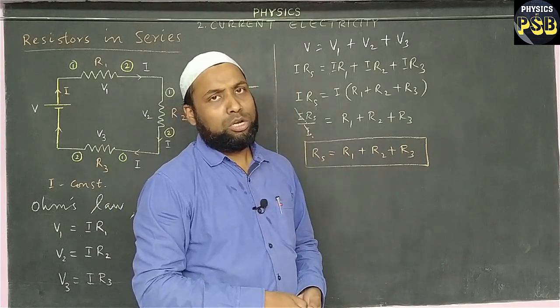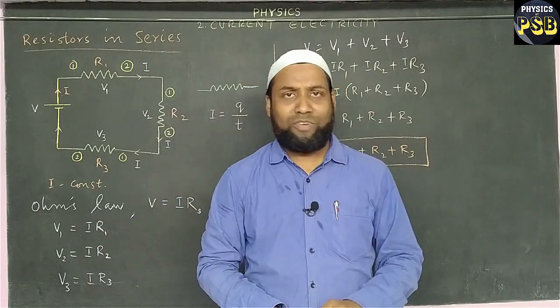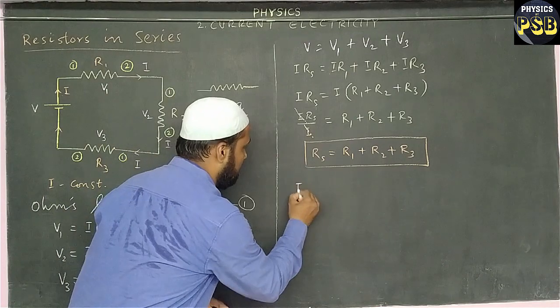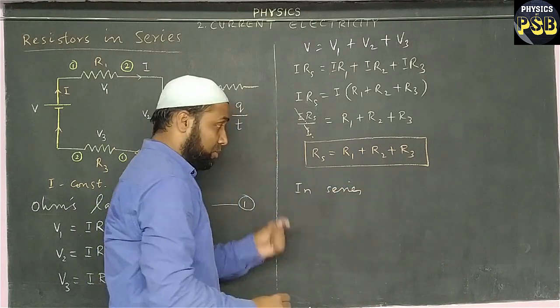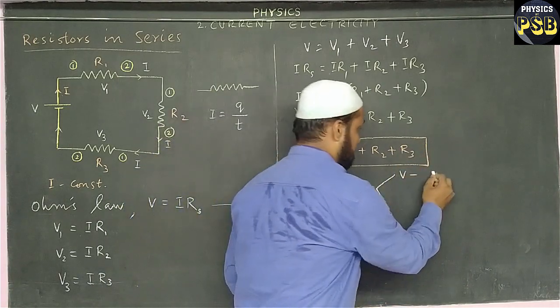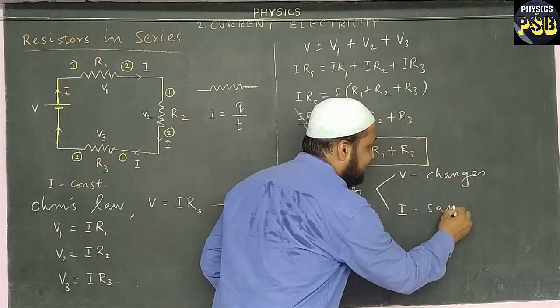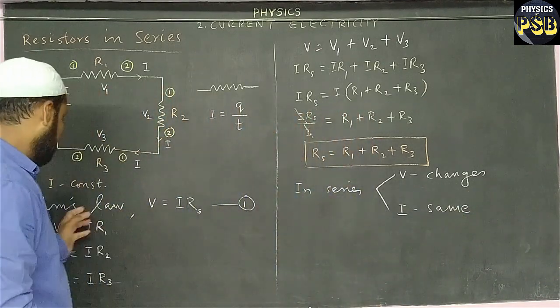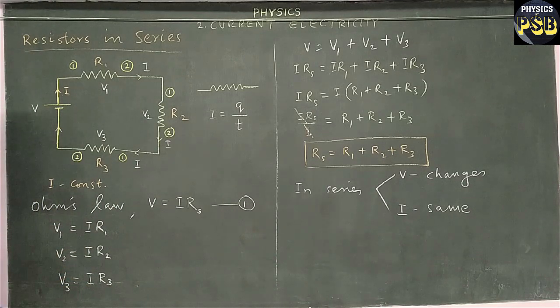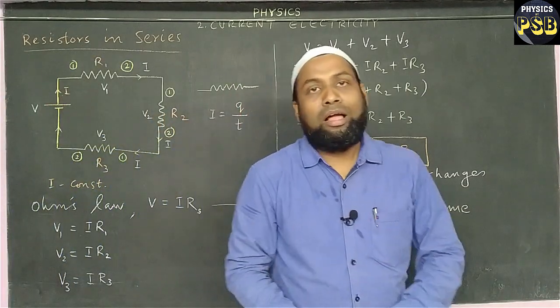Now I will tell you one shortcut to remember how the current and voltage vary in a series combination. In a series combination, always remember voltage changes, V changes, but the current remains same. It is obvious from these equations. You see, I remains same but the voltage changes in the circuit. I hope this video is useful.